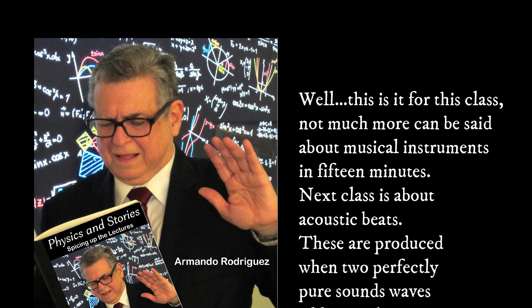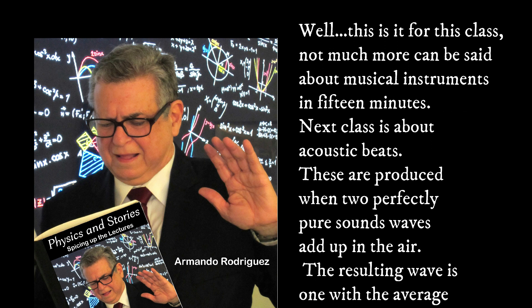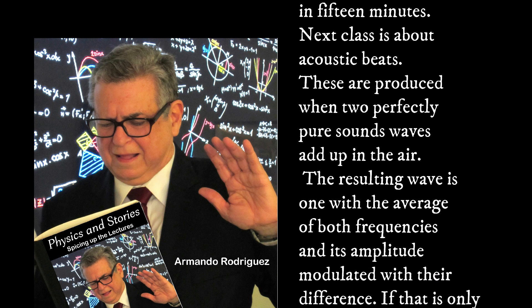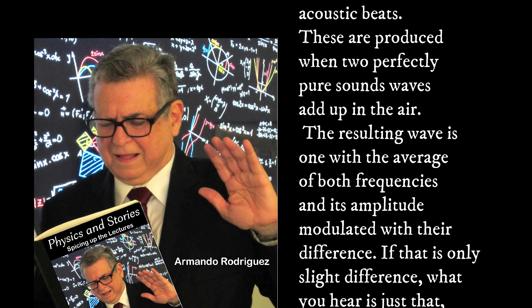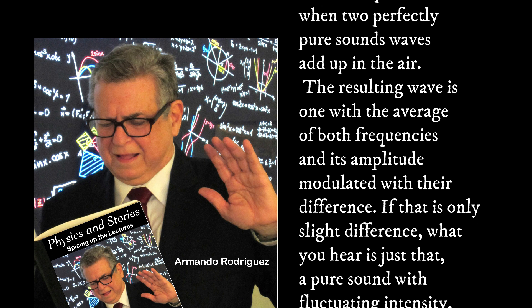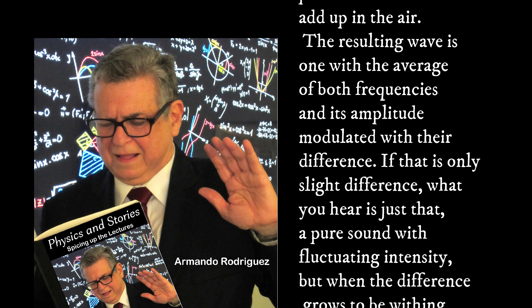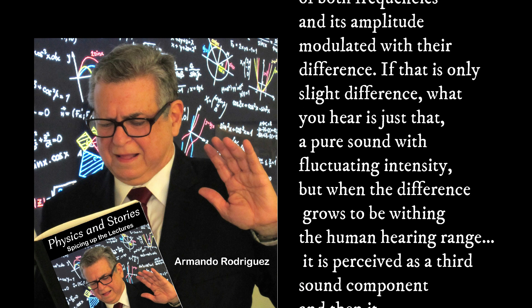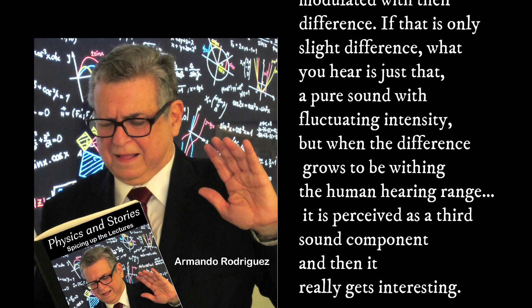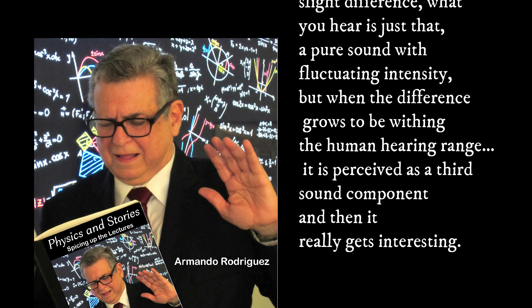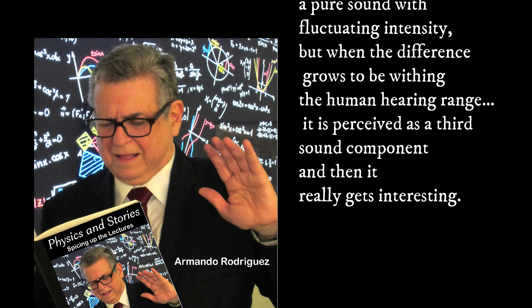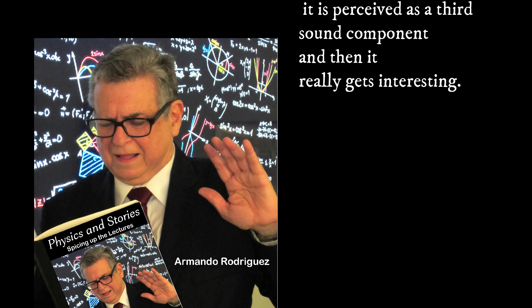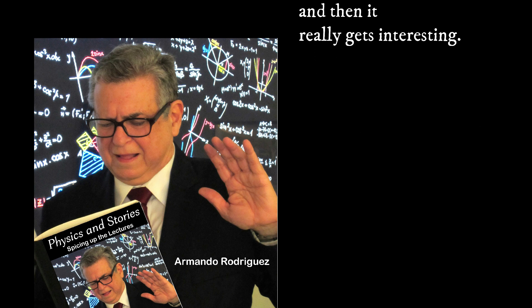These are produced when two perfectly pure sounds add up in the air. The resulting wave is one with the average of both frequencies and its amplitude modulated with their difference. If there's only a slight difference, what you hear is just that: a pure sound with fluctuating intensity. But when that difference grows to be within the human hearing range, it is perceived as a third sound component. And then it gets really interesting.